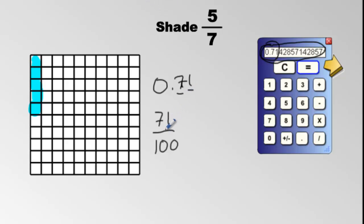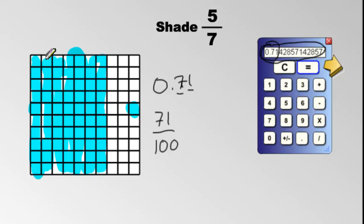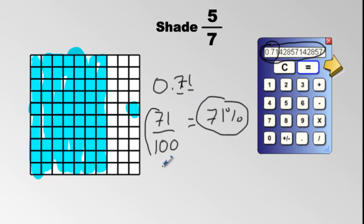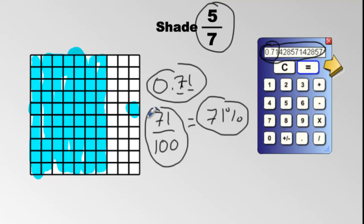We go ahead and shade 71 out of 100: 10, 20, 30, 40, 50, 60, 70, and then one more — it doesn't matter where that last one is, as long as we have 71 shaded. Can you calculate the percentage that's shaded? 71%. Because 71 out of 100 is 71% — it's out of 100. So the decimal 0.71, the fraction 71/100, and 71% all mean the same thing.